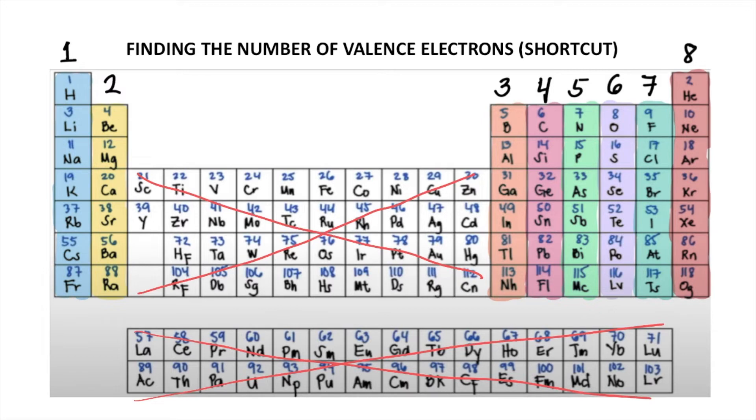So again, this shortcut will only work for elements under columns 1 to 8. The number I put on top, the column number, is very important because that will tell you the number of valence electrons for the elements under that column.